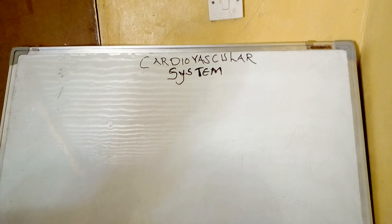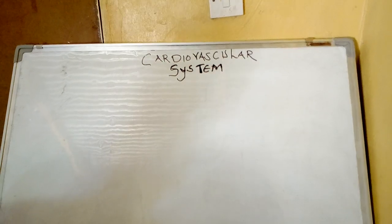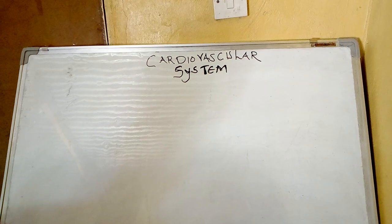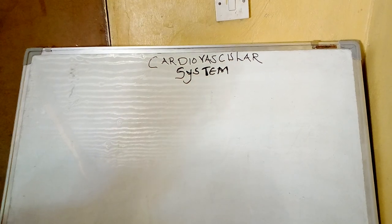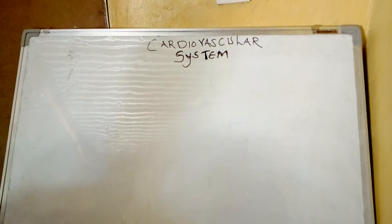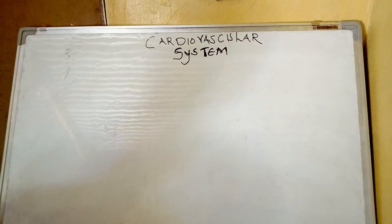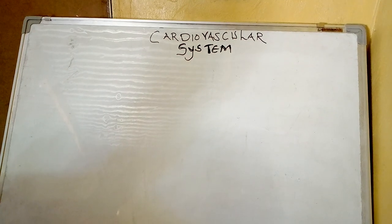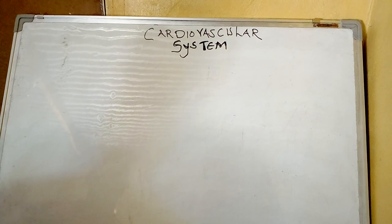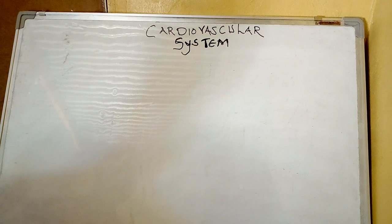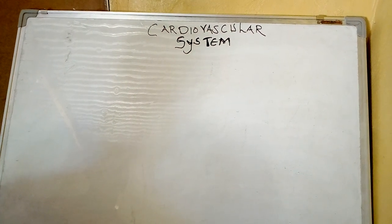Welcome to today's presentation where we are going to talk about the cardiovascular system. The cardiovascular system is a system that comprises the heart and its blood vessels. When you look at the word 'cardio' we are referring to the heart, and 'vascular' we are referring to the blood vessels. In short, the cardiovascular system is a transport system.